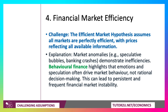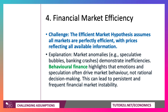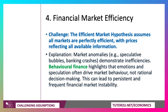We know there are many frequent persistent market anomalies, from speculative bubbles to commercial banking crashes, that demonstrate deep-rooted inefficiency in financial markets. And if you've seen The Big Short, you might understand that more. Behavioural finance highlights that emotions and speculation often act as drivers of market behaviour, not purely rational decision making. And that can cause persistent and frequent financial market instability, as we have seen.